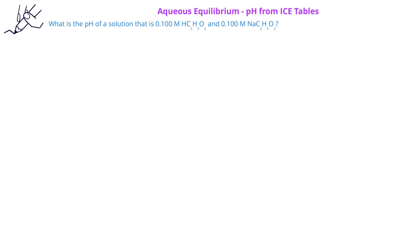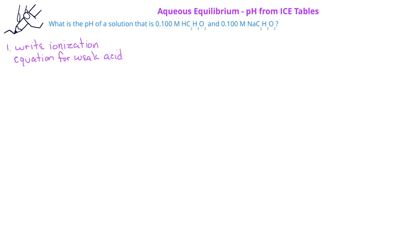In this problem, we're asked to find the pH of a buffer solution composed of 0.100 molar acetic acid and 0.100 molar sodium acetate. In this version of the problem, we'll use ICE tables and the common ion effect to find the pH. We start by writing the ionization equation for the weak acid. The acetic acid reacts with water and is in equilibrium with a hydronium ion and the acetate ion, C2H3O2-.